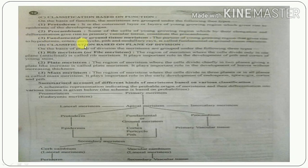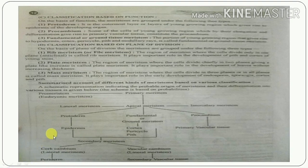The first is rib meristem, also called file meristem. In this type, cells divide only in one plane — anticlinal division. It plays an important role in the development of pith and cortex of young stems.